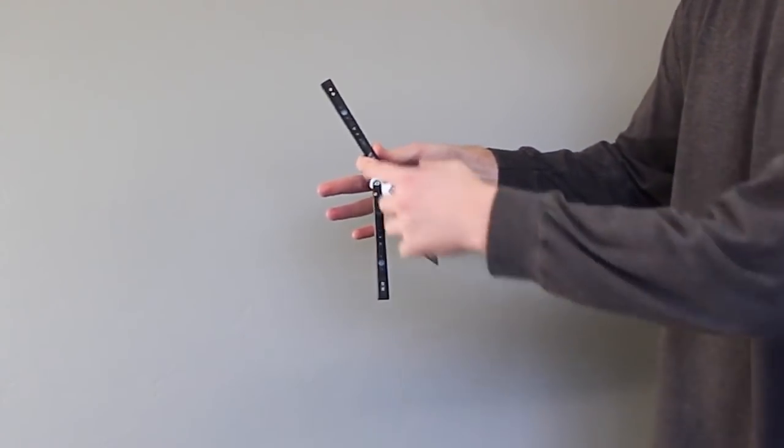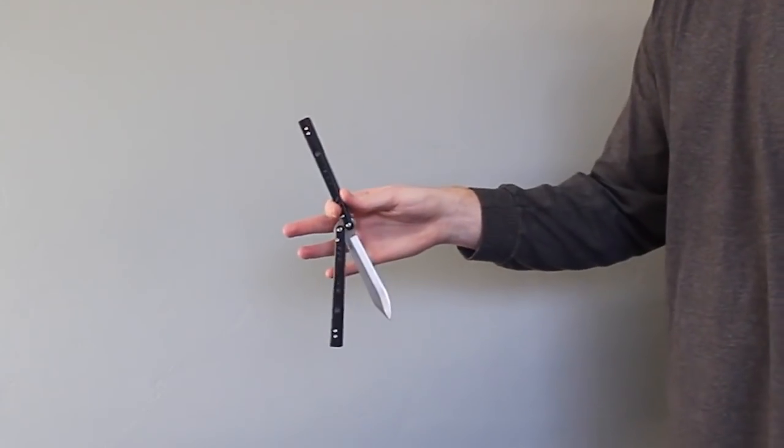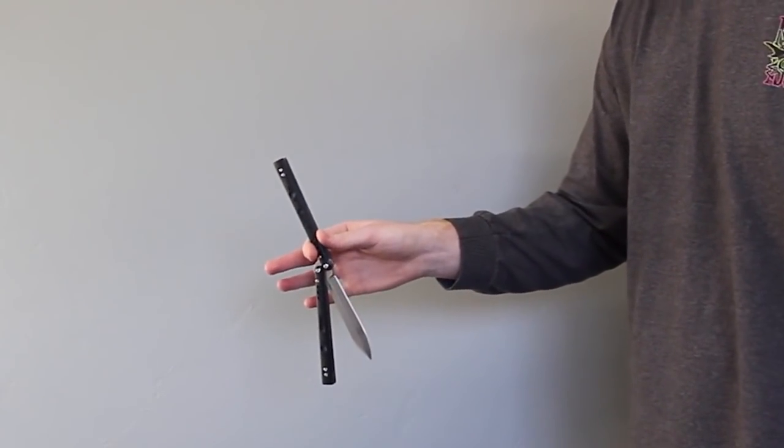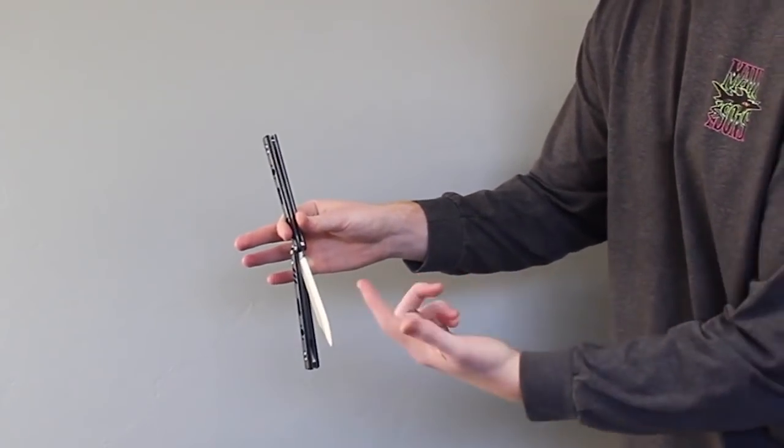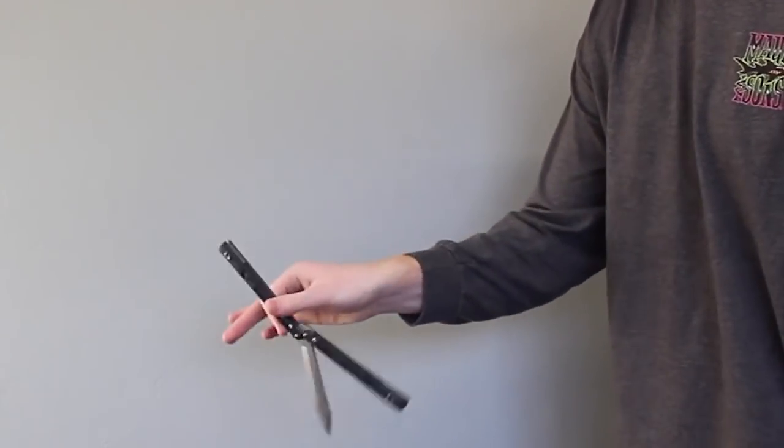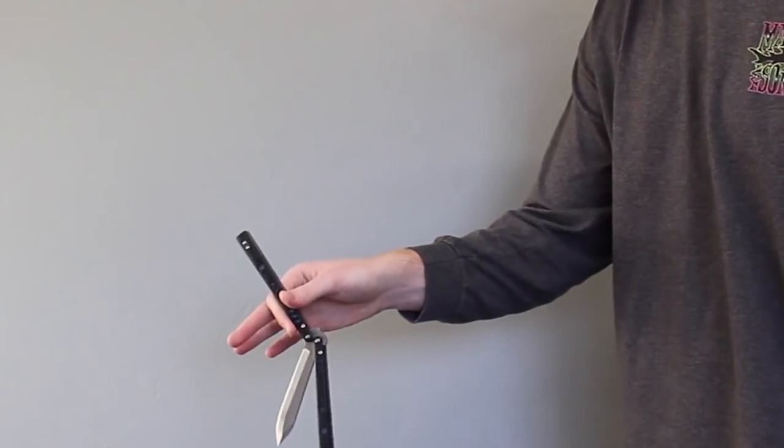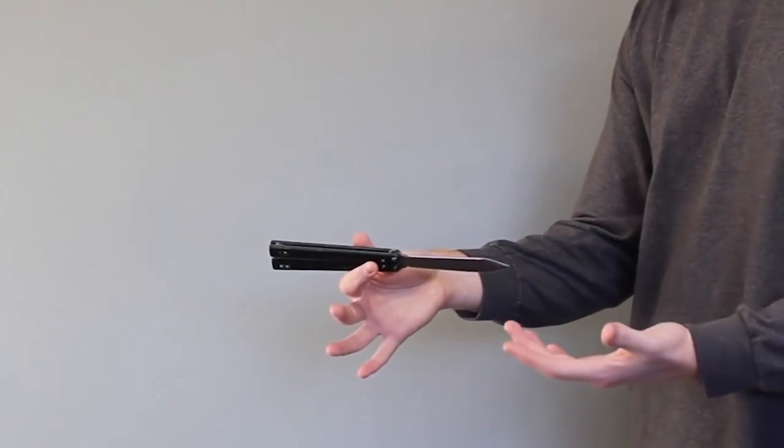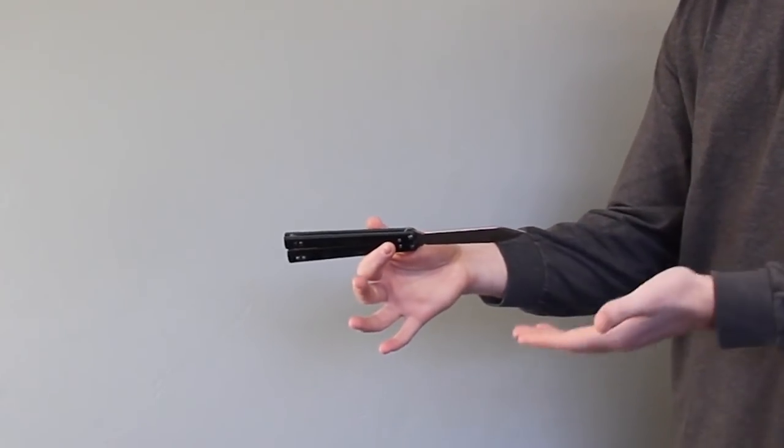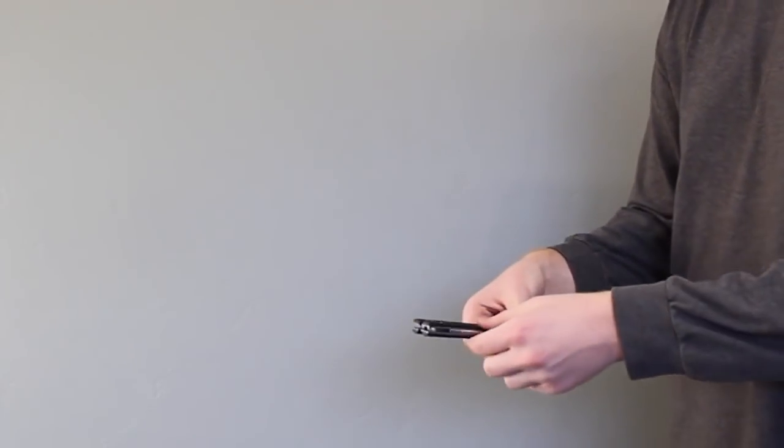So from here, holding the bite handle about vertically, like so, you're going to flick towards you and rotating that way, one rotation, like so. And then with that momentum, simply bringing the knife up like this until you have it in a pen slash ice pick grip, like this. And I'll show you that again.